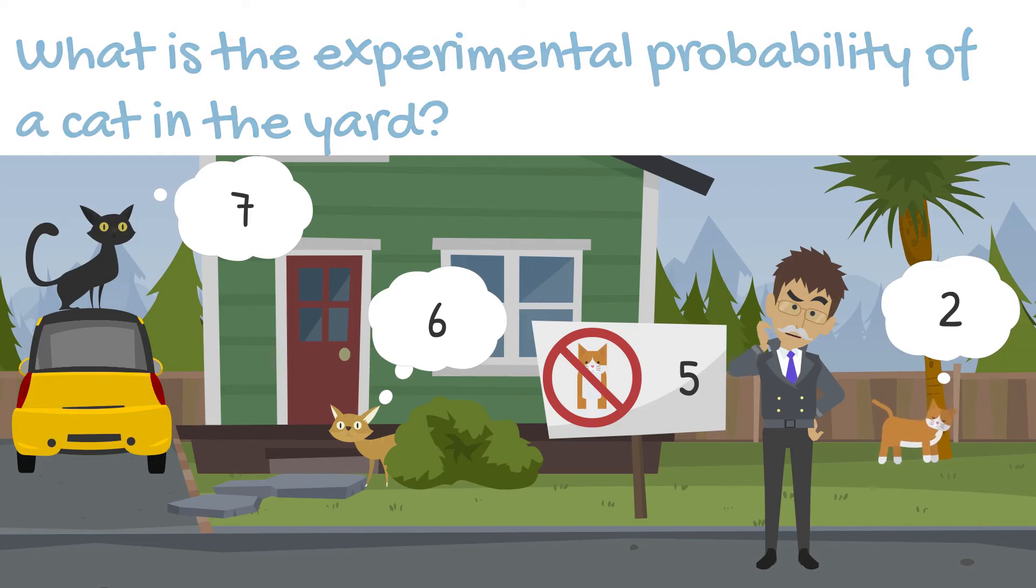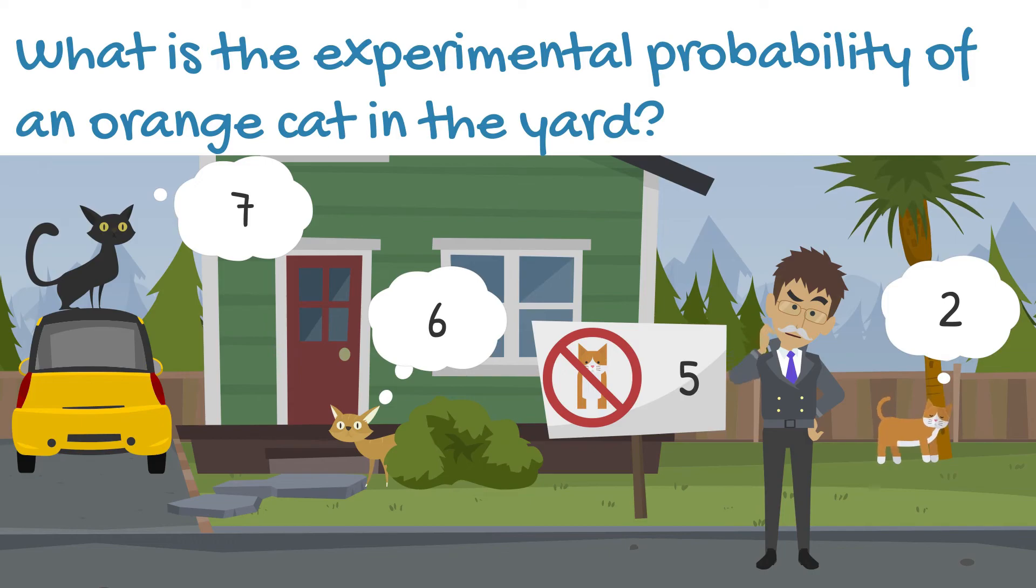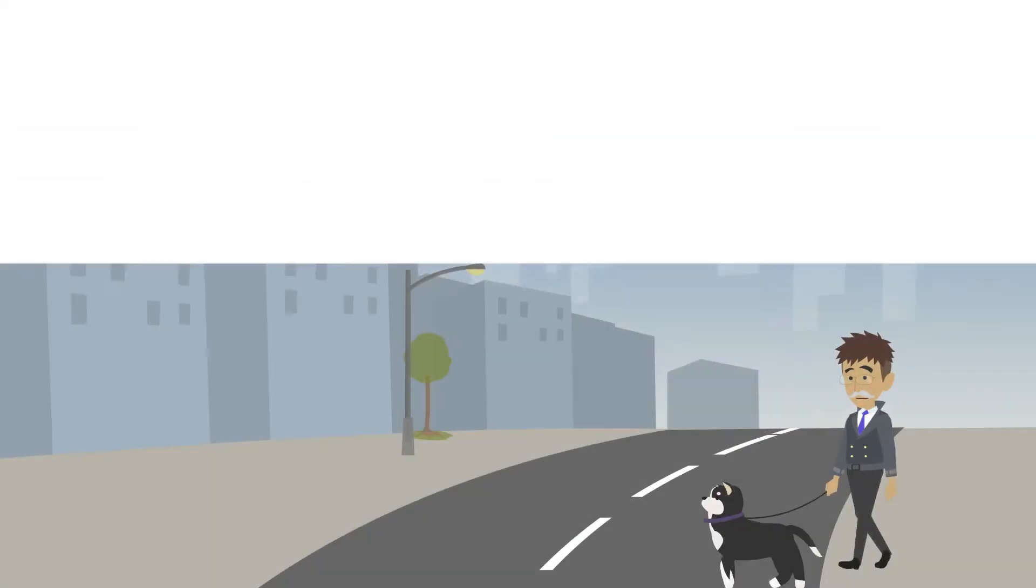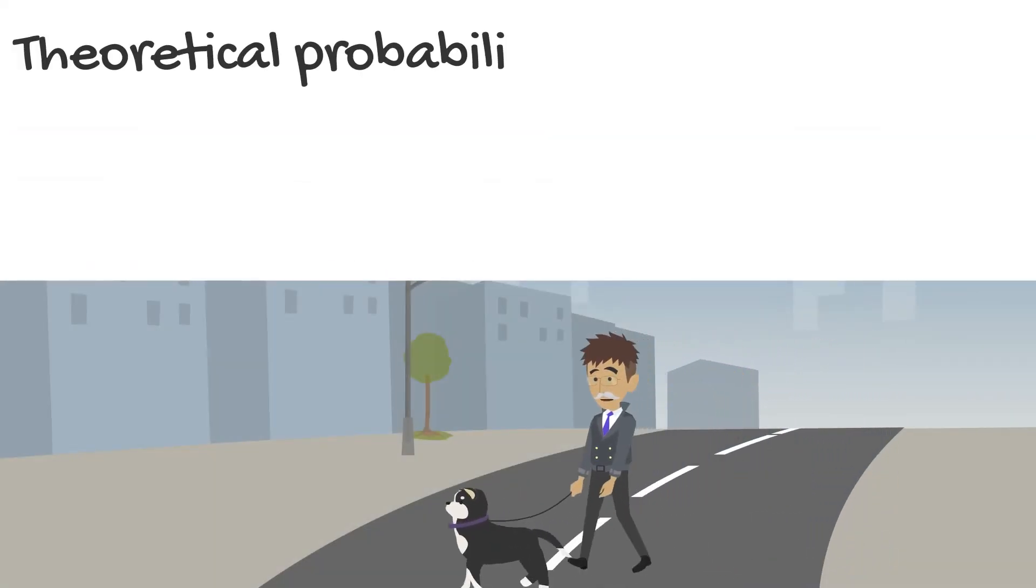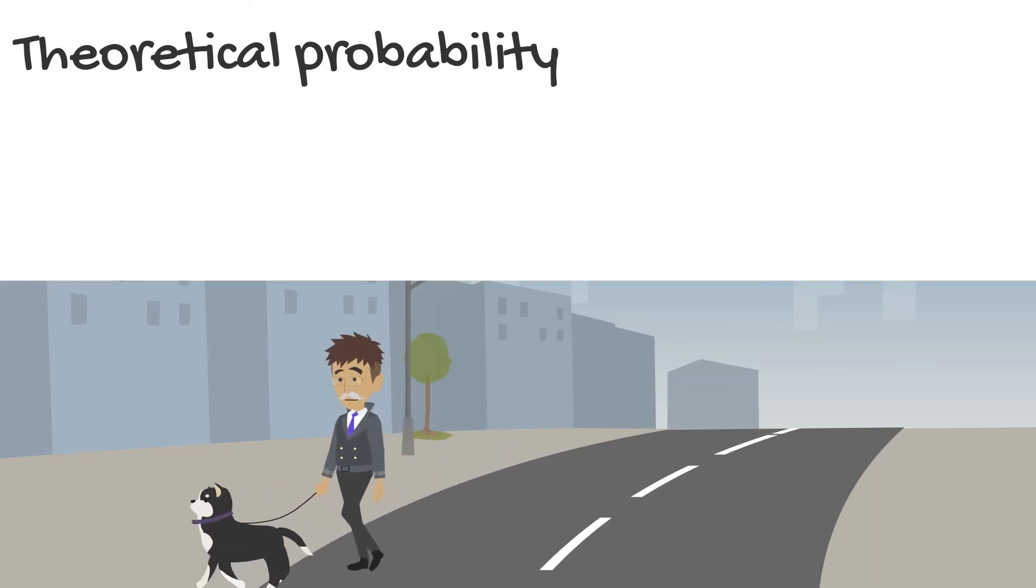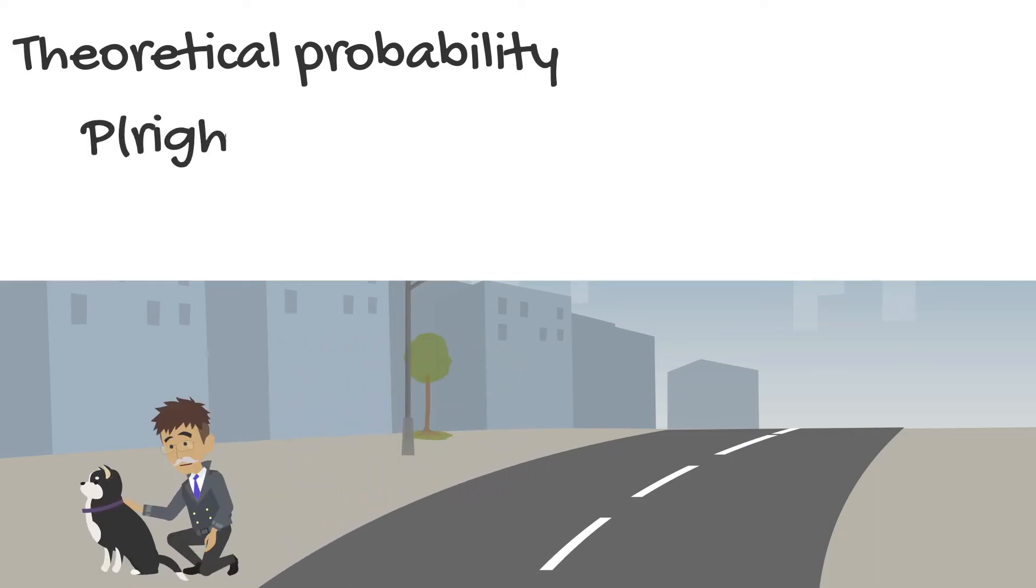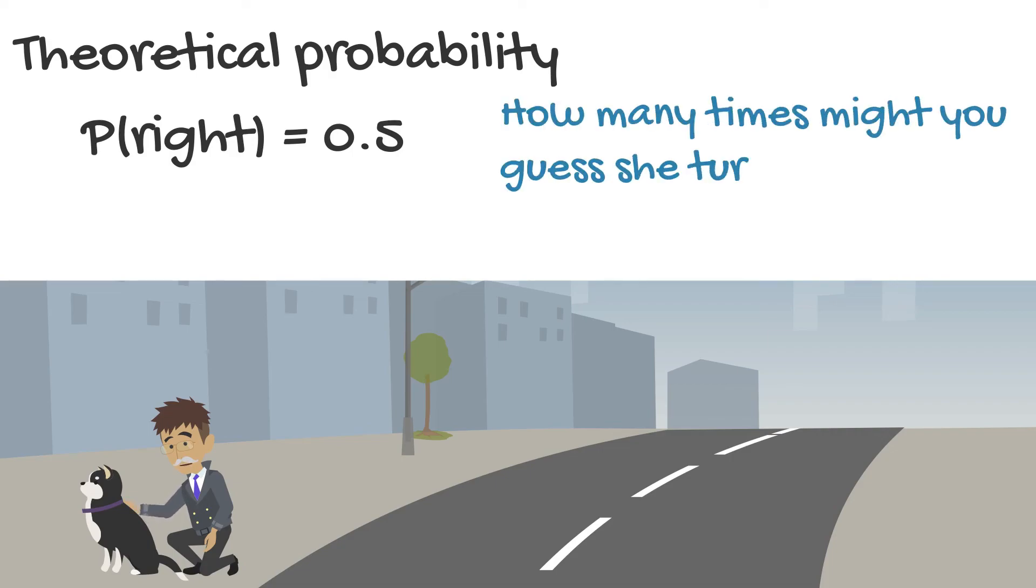What is the experimental probability of that cat being orange? Earlier, we determined the theoretical probability for Random turning right at the start of our walkie to be five tenths, one half, or fifty percent. Based on this information,